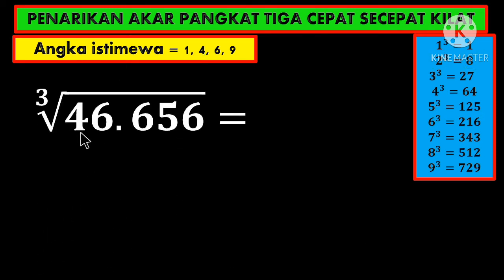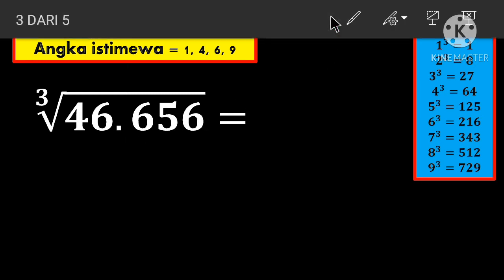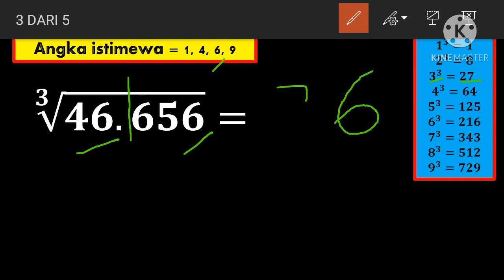Cube root of 46,656. We separate it first at the thousands place. We look here, the last digit is 6. Is it there? Yes, so definitely the last digit is 6. The front is 46—which one is closest to 46? That's 27, so the first digit is 3, making it 36. How about that? Very easy, right?